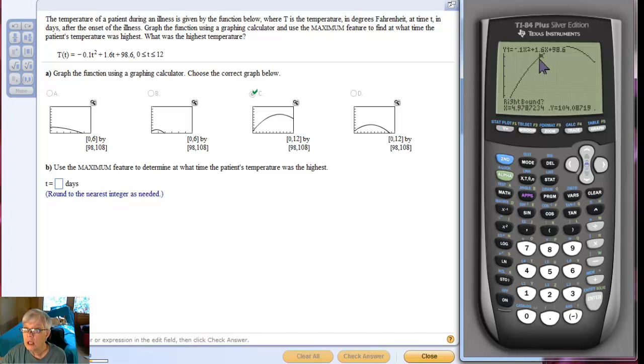Now, it says right bound. What we do is we take the right arrow key and bring the cursor over here to the right side of the maximum we're looking for. Right there. It's on the right. And I'm going to hit Enter. Now, guess means move back to the left. Try to put the cursor as close to being on top of the maximum as you can, and you rarely can get there. Then hit Enter.